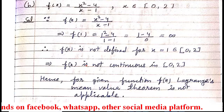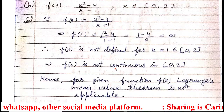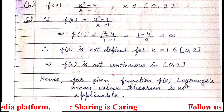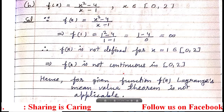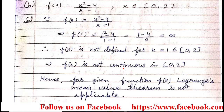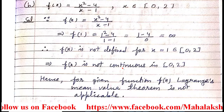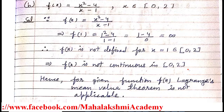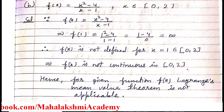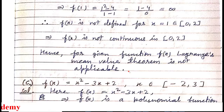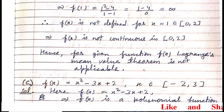This implies f(x) is not continuous in the closed interval. The first condition is not satisfied. That's why we stop our solution by writing that Lagrange's mean value theorem is not applicable. There are two conditions: first, the function should be continuous in the closed interval; second, it should be differentiable in the open interval. Since the first condition is not satisfied, we conclude directly that Lagrange's mean value theorem is not applicable. Part B is completed.